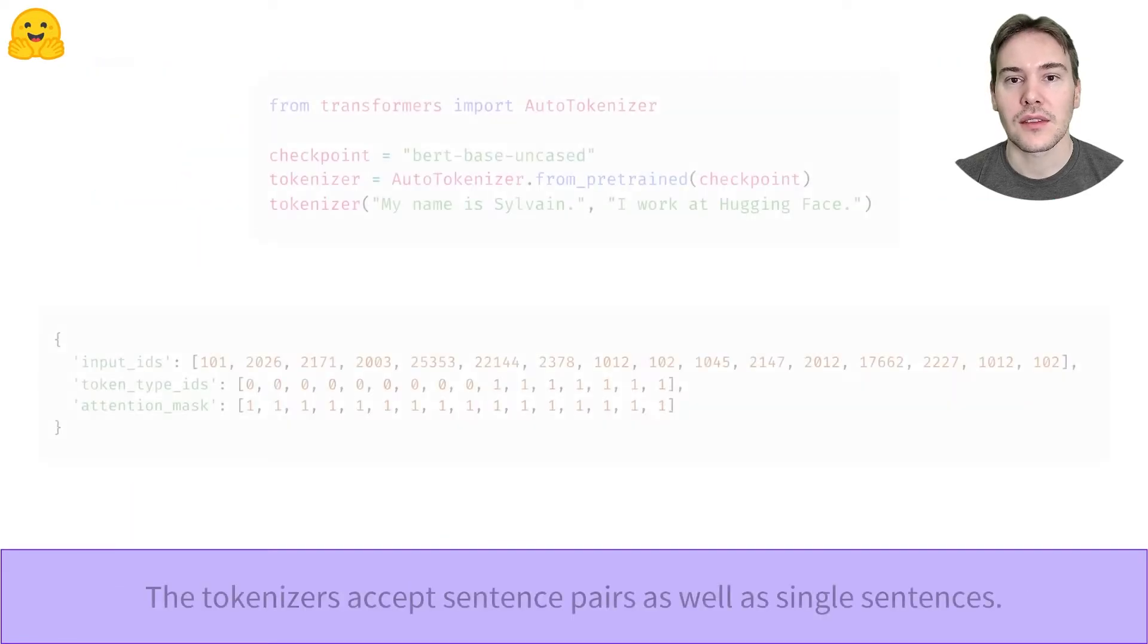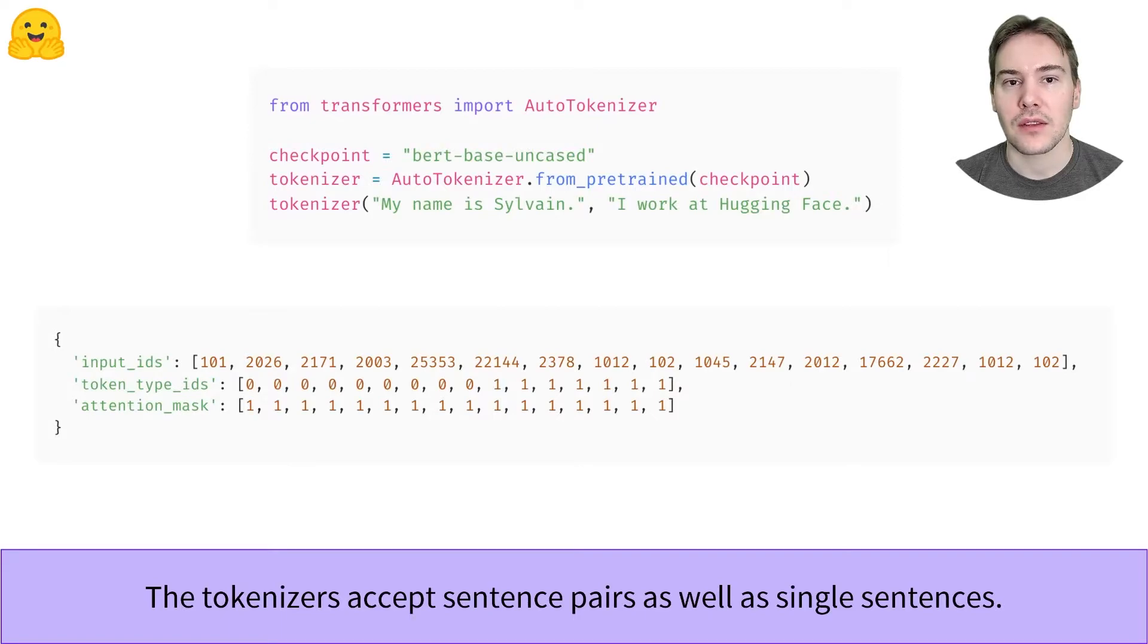Fortunately, the tokenizer from the Transformers library has a nice API to deal with pairs of sentences. You just have to pass them as two arguments to the tokenizer.